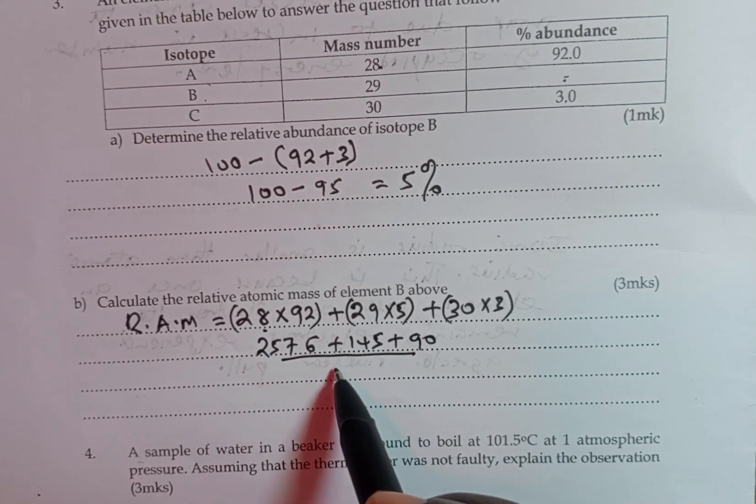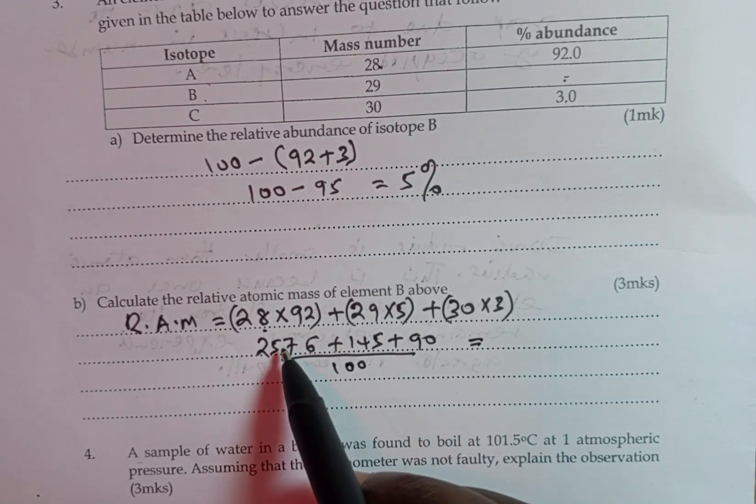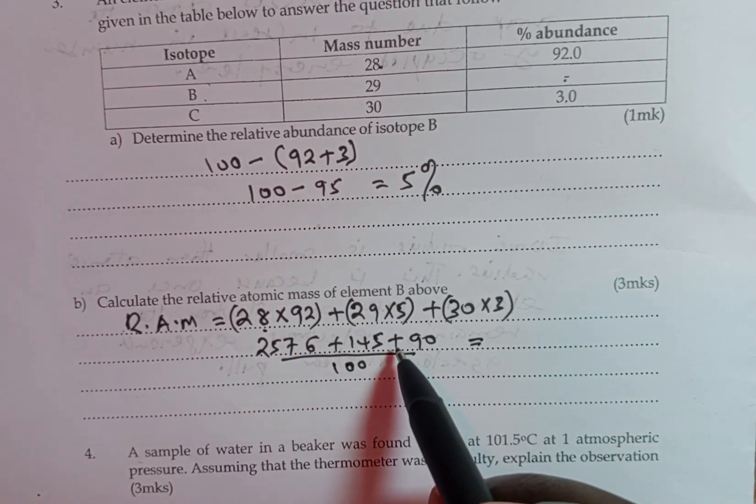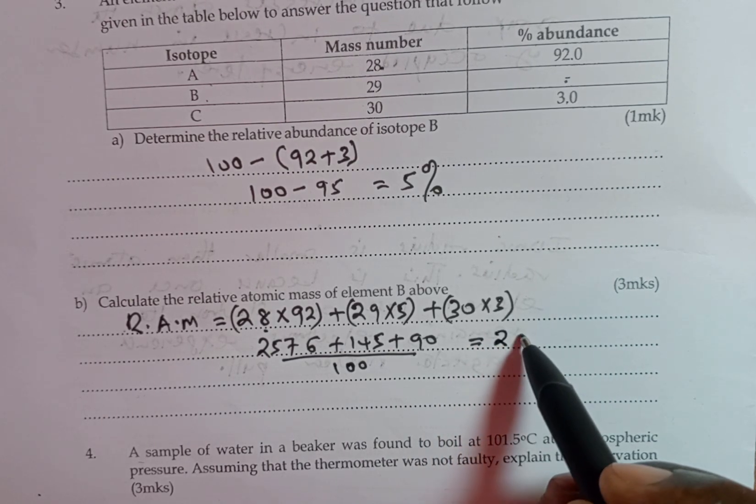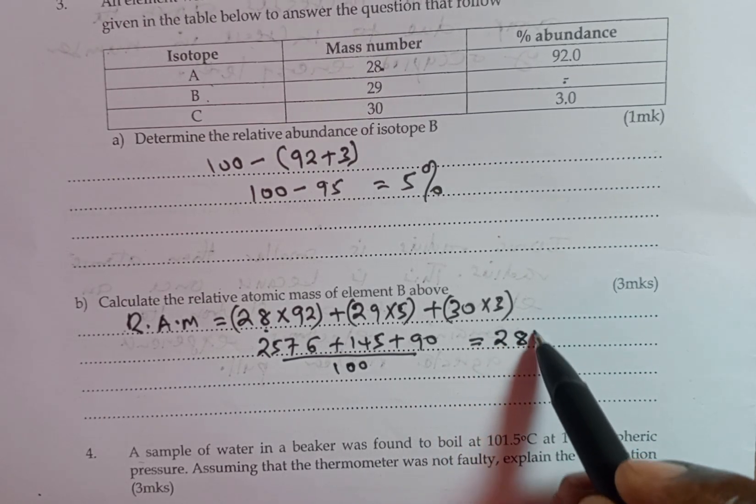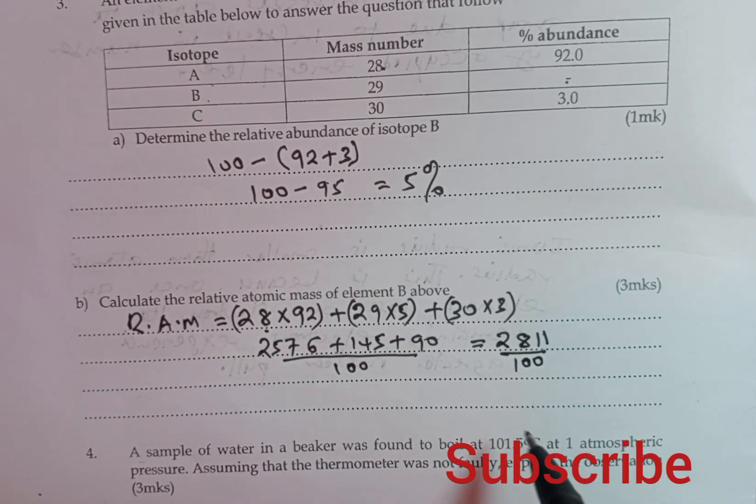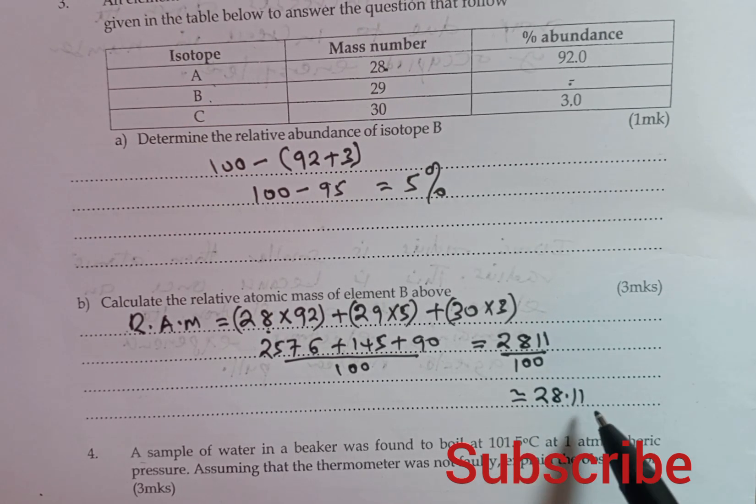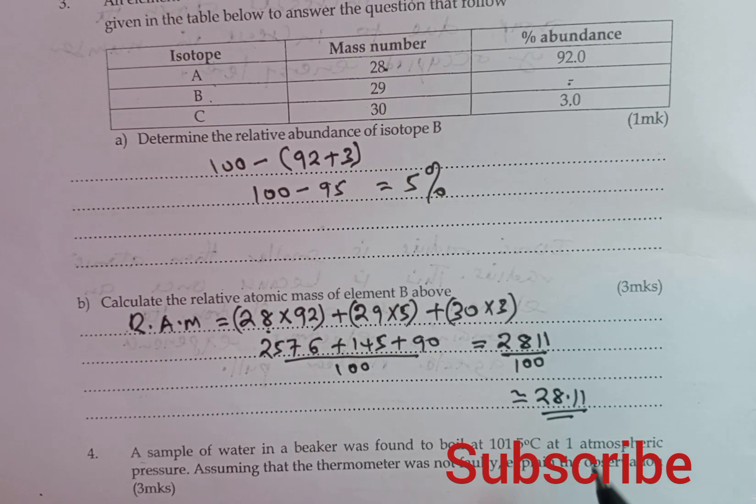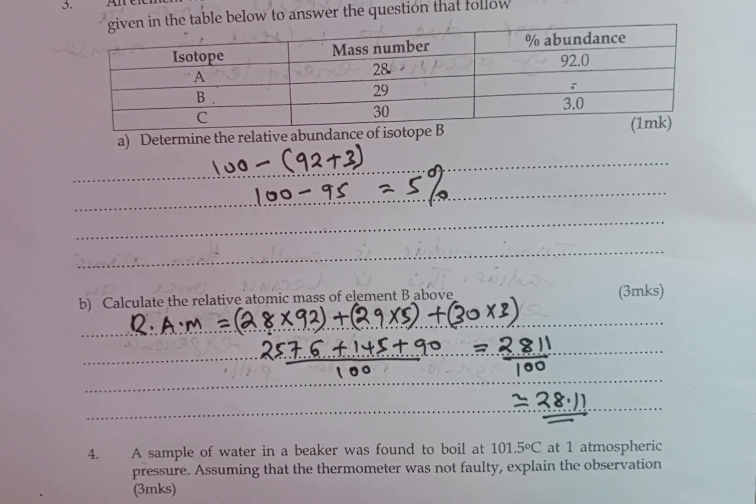Everything here is going to be divided by 100. And when you sum all the numerators, we are going to get a total of 2,811 divided by 100. And this gives us approximately 28.11 as the relative atomic mass of that particular element. And thank you for watching.